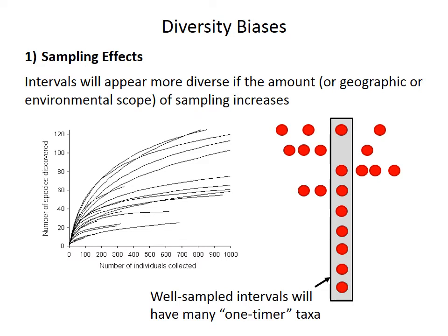One big problem — which affects all types of diversity counts — is variation in the amount of sampling. Collecting more fossils will invariably reveal more species. Sampling from a greater range of environments or regions can also increase apparent diversity in a time interval. As a result, well-sampled time intervals will have many one-timer taxa — ones that only occur in a single time interval — but some of those may also have occurred in earlier or later intervals if those other time periods were sampled better. There are ways of addressing sampling intensity, but those methods require more than a record of just first and last occurrences.